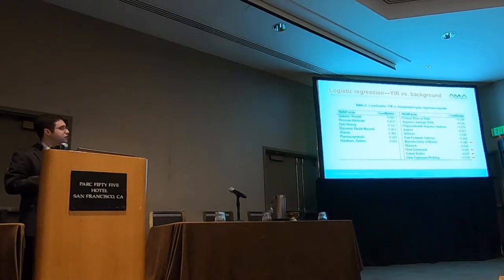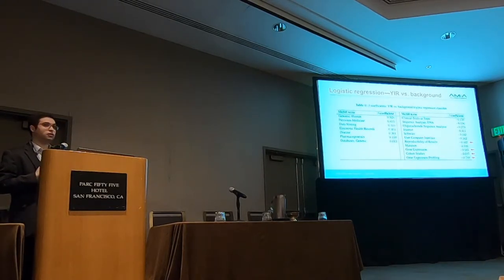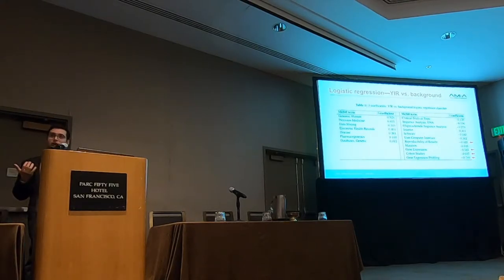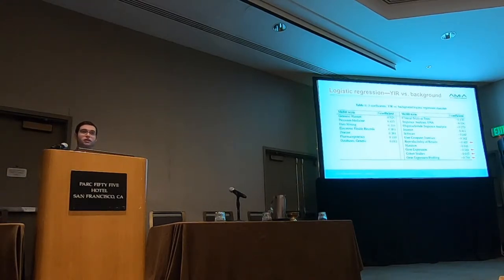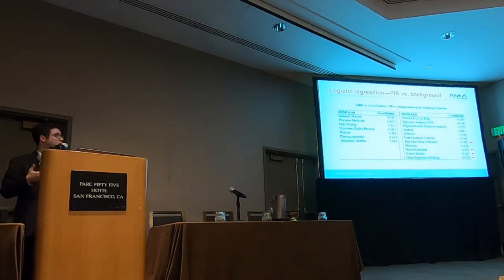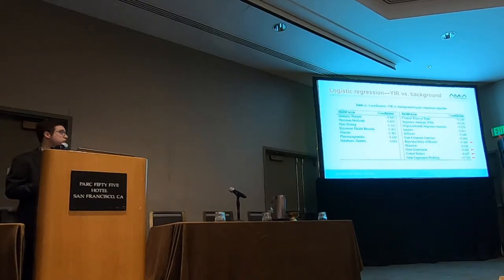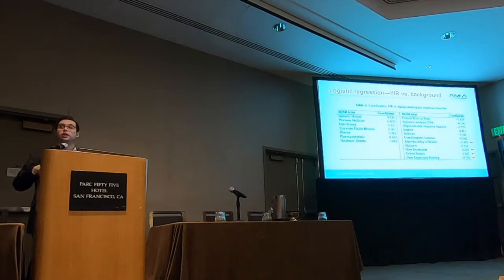On the right column are MeSH terms that are anti-predictive of Year-in-Review articles. There are some really interesting things here: reproducibility of results is something we really push in this field — so is this something we're missing out on? Additionally, gene expression studies, cohort studies, and gene expression profiling tend to be pretty central to this field. So we're wondering what causes this — is it engineered into the process, an artifact of the data, or something we can leverage to learn more about how to highlight important topics in the future?